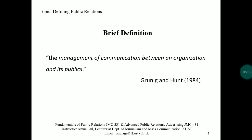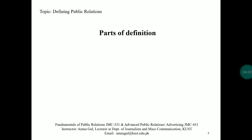The component parts of Grunig and Hunt's definition are: first, management — the body of knowledge on how best to coordinate the activities of an enterprise to achieve effectiveness. Second, communication — it's not only about sending a message to a receiver, but also understanding the messages of others through listening and dialogue. That is why it is a two-way process. Public relations, as opposed to journalism and advertising, is not one-way; it is also about listening to the other side and working it out.